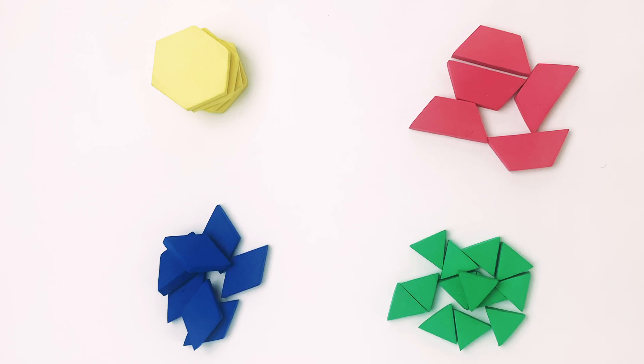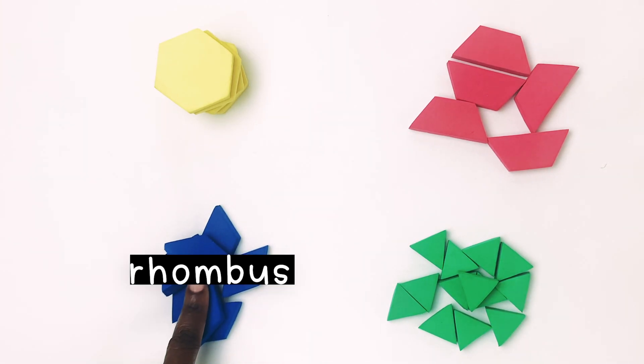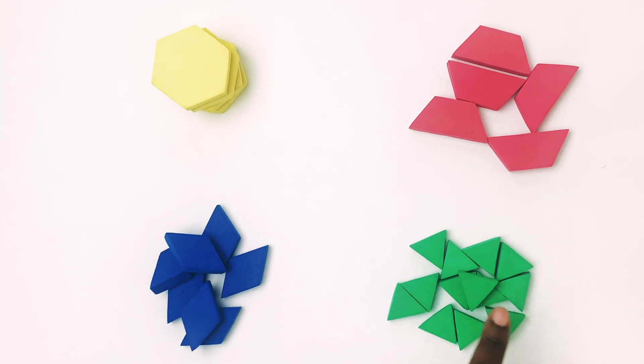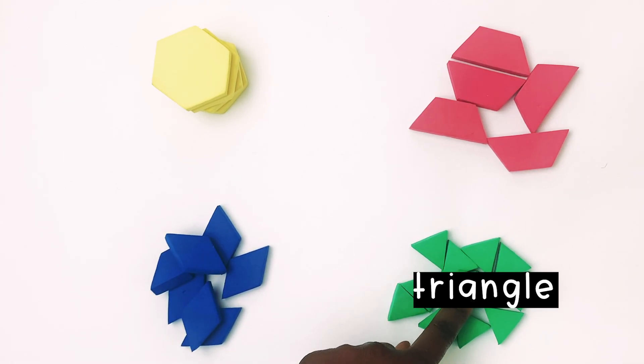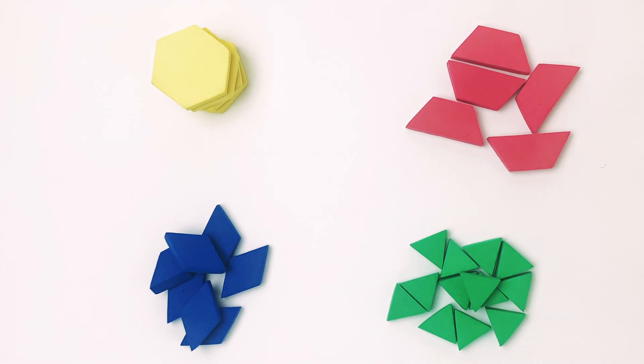So let's look at our shapes. First, we have a hexagon, then we have rhombus, and triangles, and trapezoids. These are all the shapes that we're going to work with.